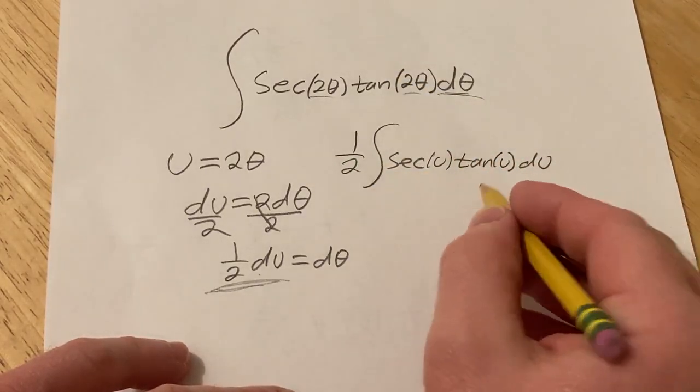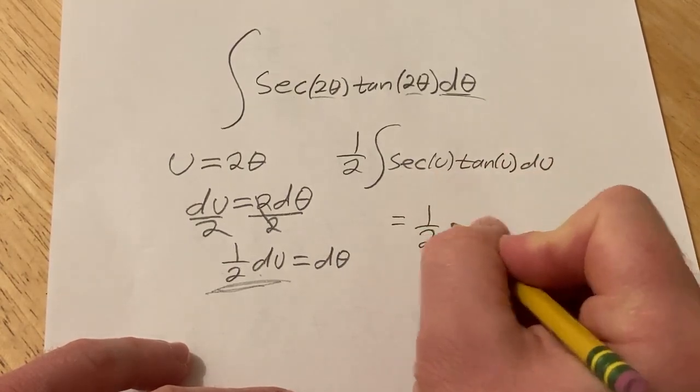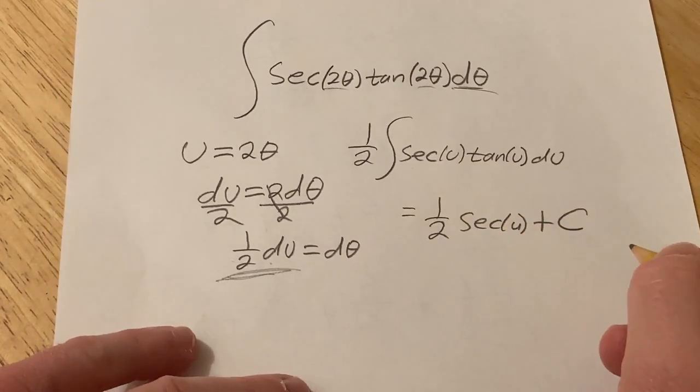Well, the derivative of secant is secant tangent. So when you integrate secant tangent, you get back secant. So this is equal to 1 half secant of u plus our constant of integration, capital C.